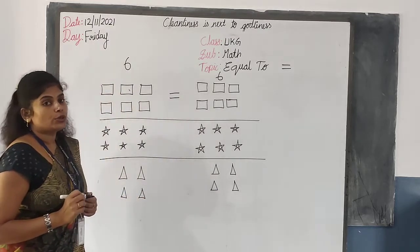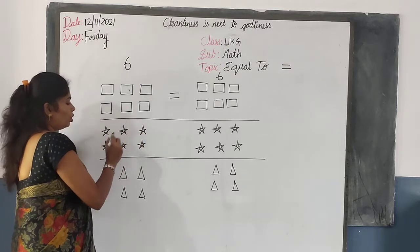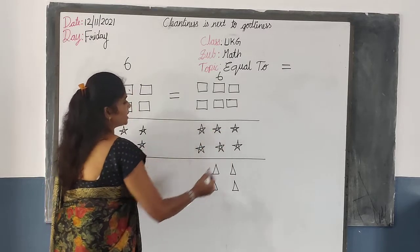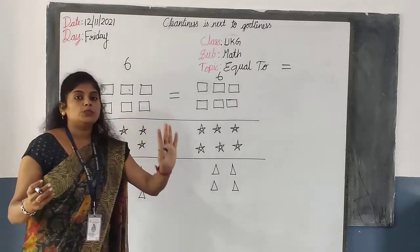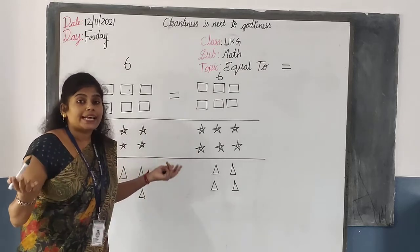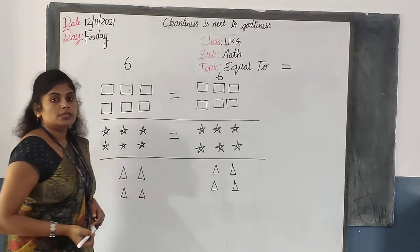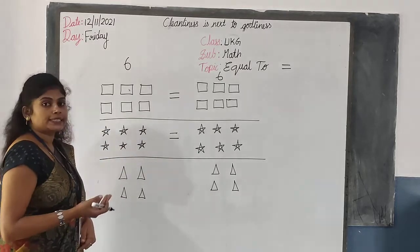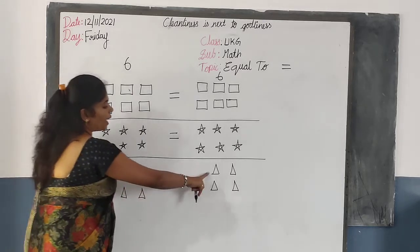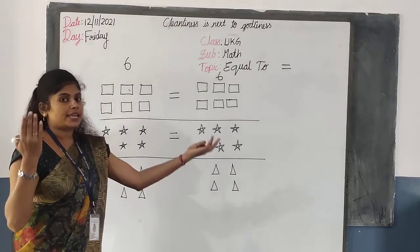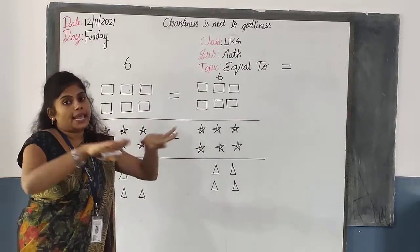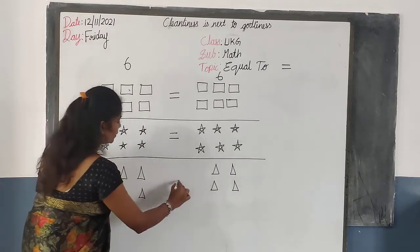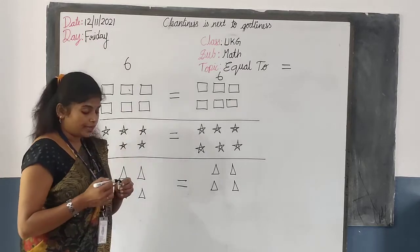This is the symbol for equal to. Next: one, two, three, four, five, six — there are six stars on the left. What about this side? One, two, three, four, five, six. So the number of objects is the same in count — six and six. So it is equal. Six is equal to six, which is the same. Next, triangles — one, two, three, four on the left, and one, two, three, four on the right. There are four triangles on both sides. The number of objects is the same, so we call it equal to. This is equal in count.